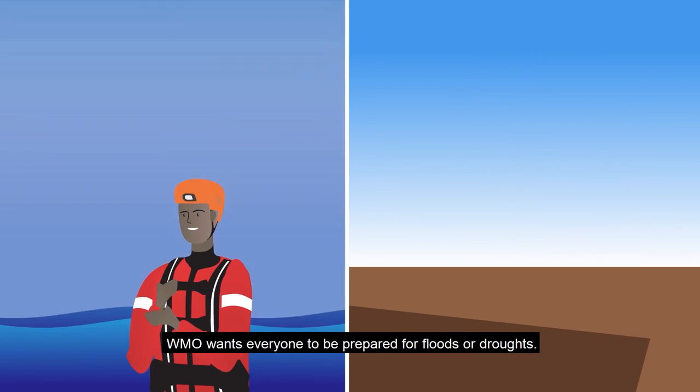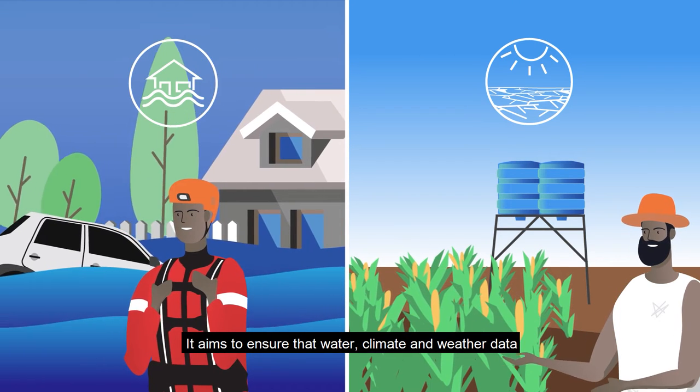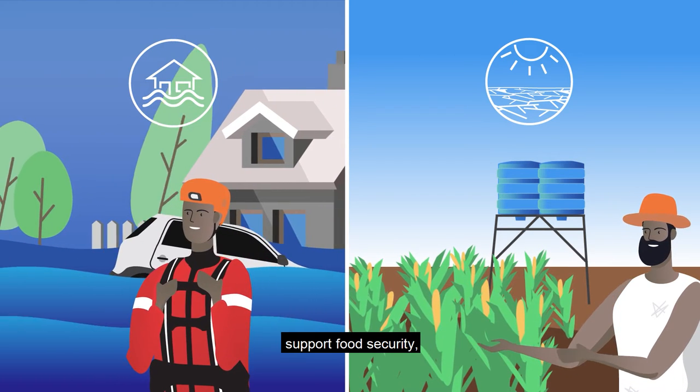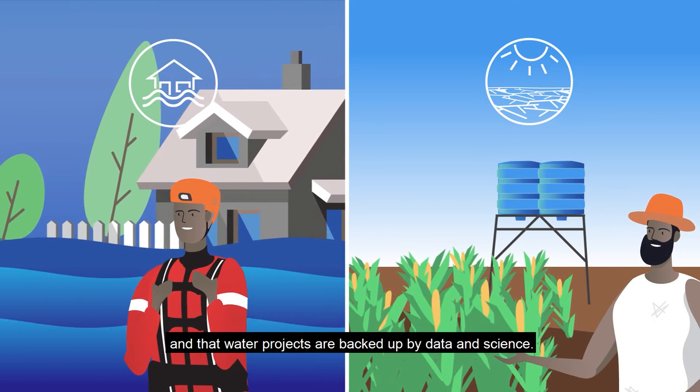WMO wants everyone to be prepared for floods or droughts. It aims to ensure that water, climate and weather data support food security and that water projects are backed up by data and science.